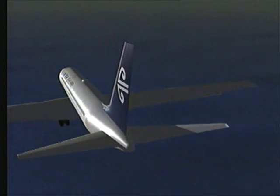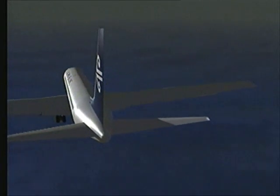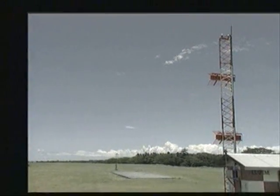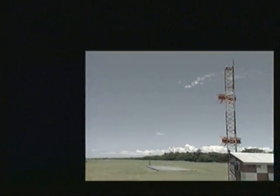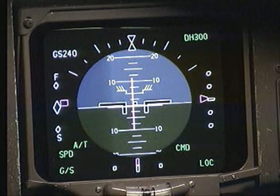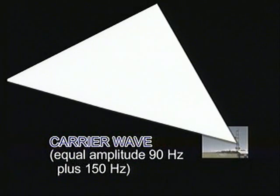Let's look at the abnormal ILS glide slope transmission that occurred on the night. The glide slope side lobe amplifier was not operating, so the aircraft only received the glide slope carrier wave. Because the carrier signal has equal amplitude 90 and 150 Hz modulations, this signal was electronically interpreted as being on glide slope.